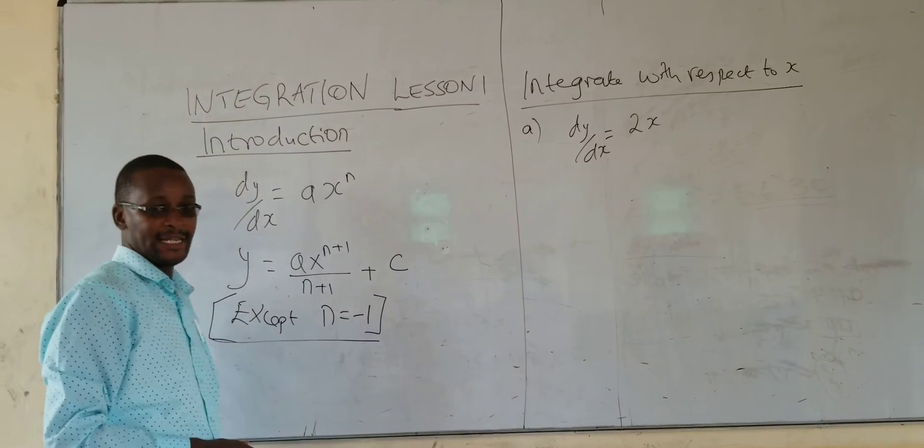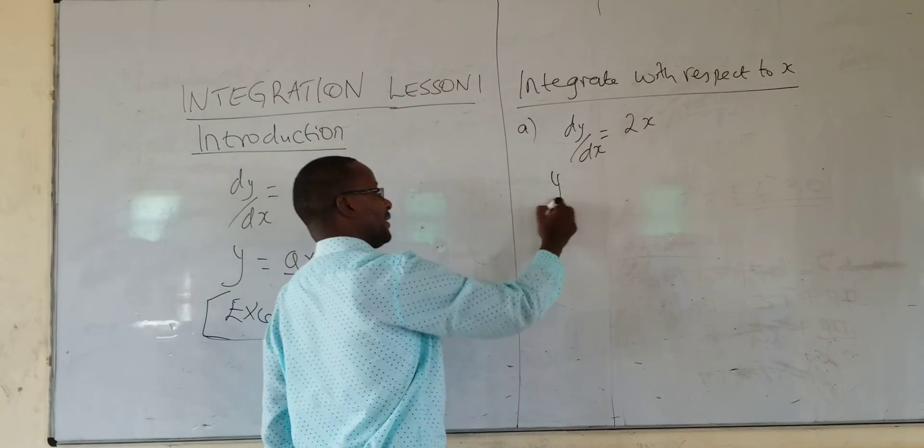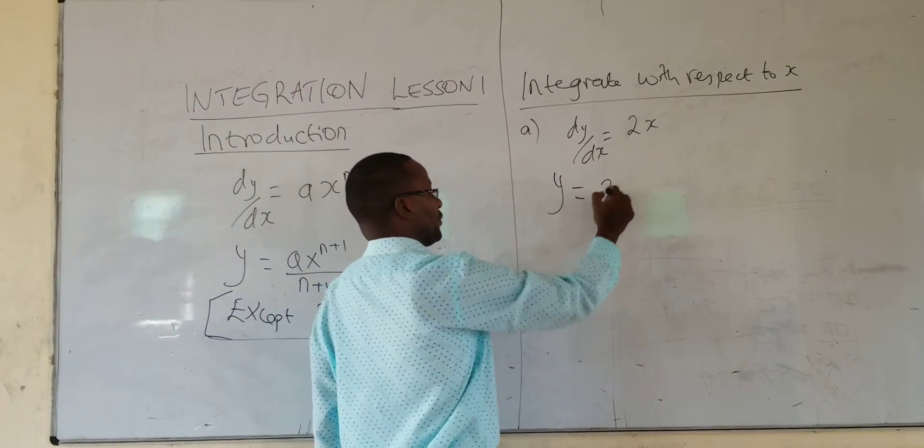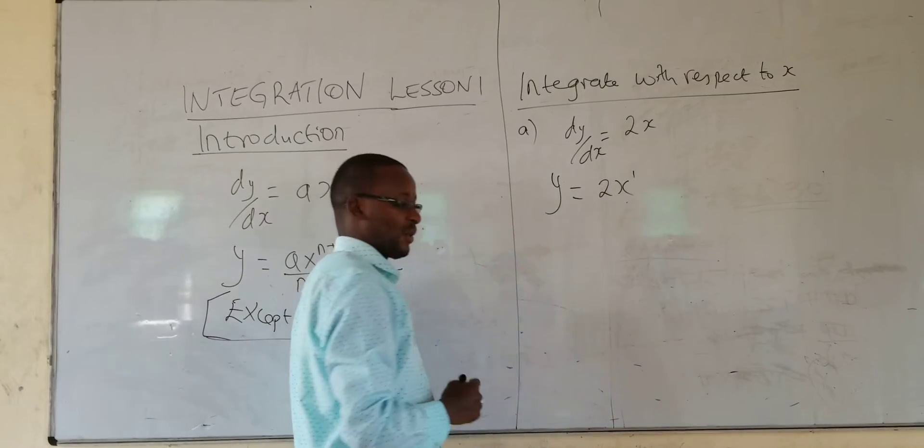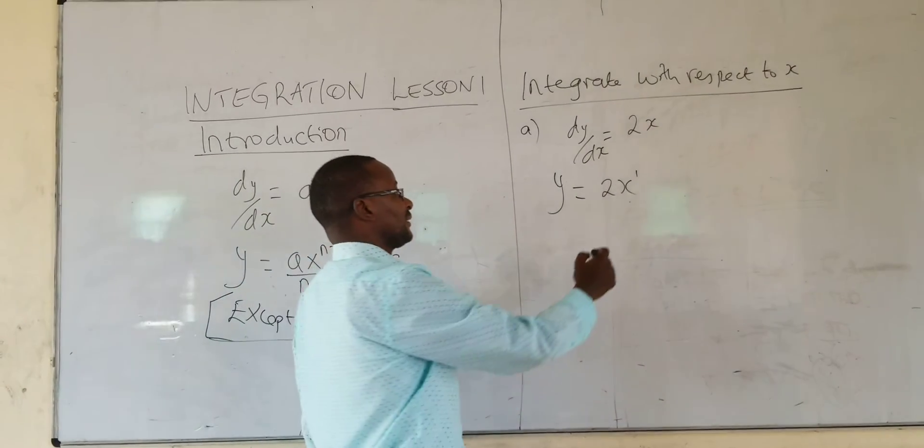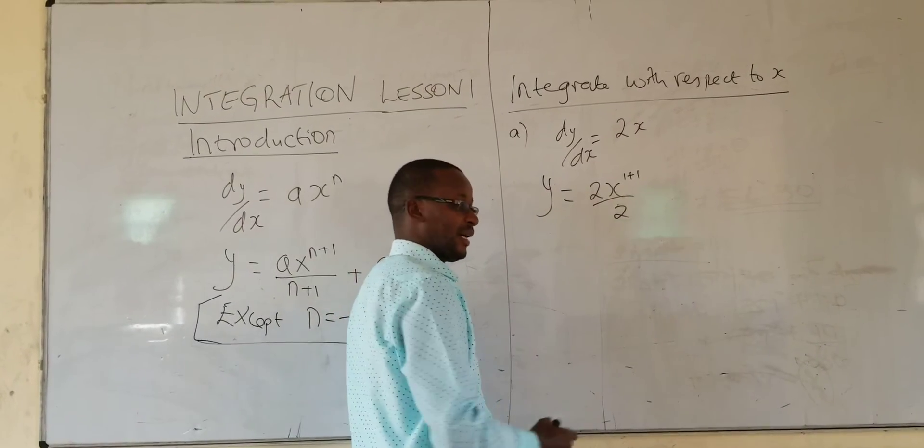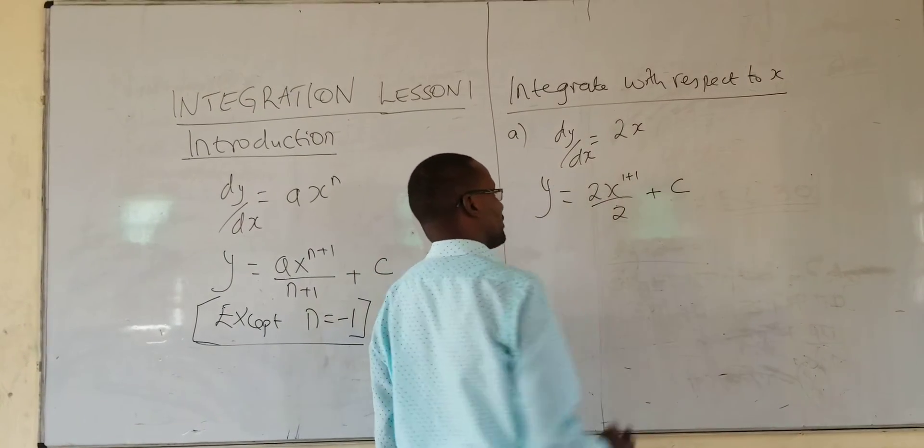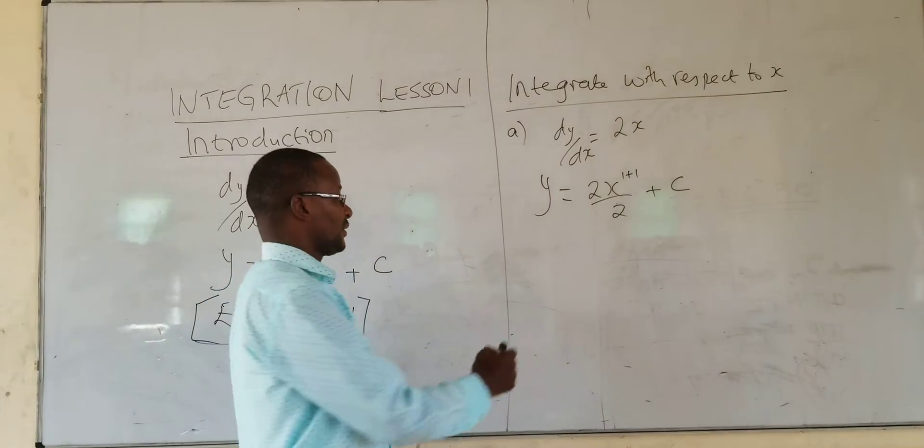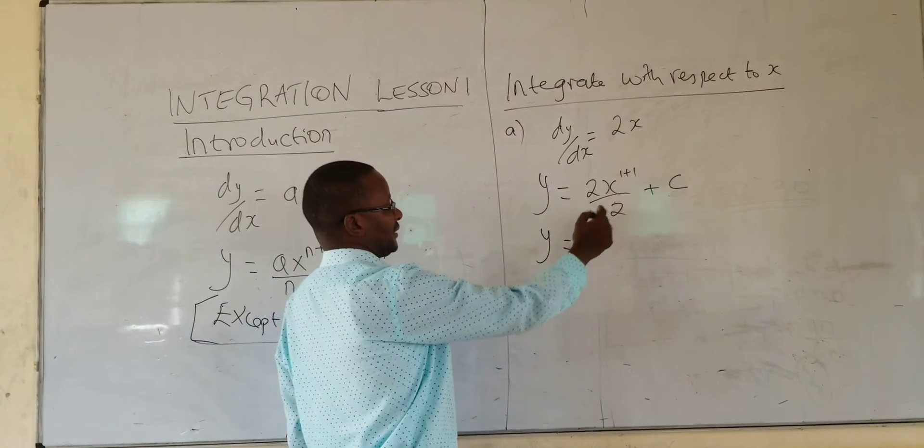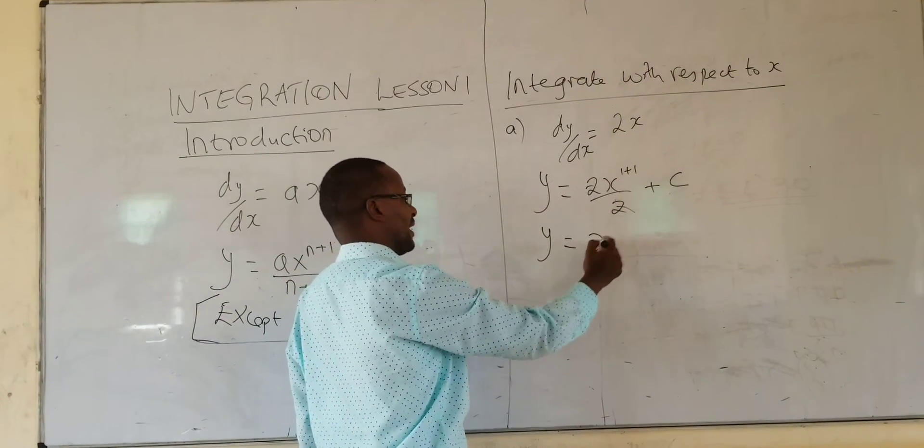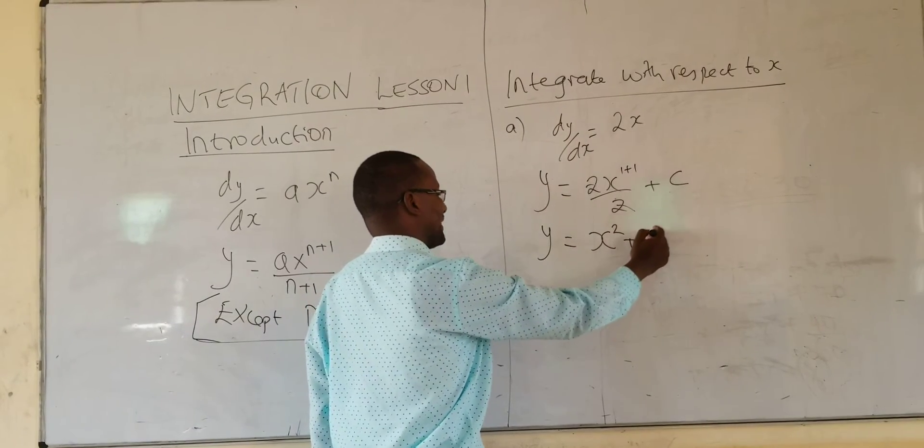This is similar to the one we had done earlier. So y is equal to 2x. The power is 1. So I add 1 and divide by 2 and you also add a constant. So y becomes what? This one will cancel. It becomes x squared plus c.